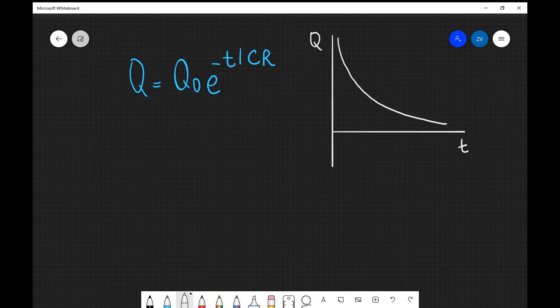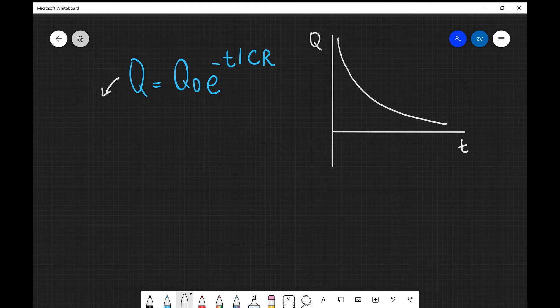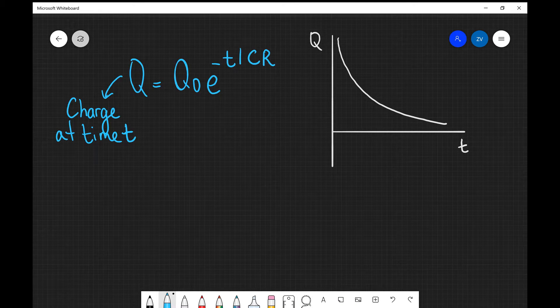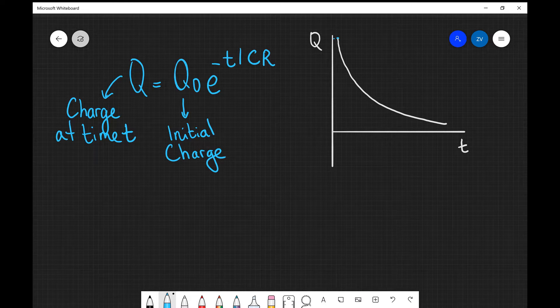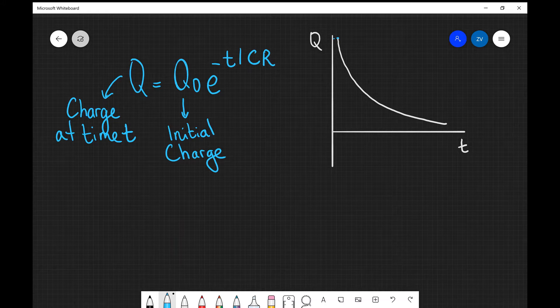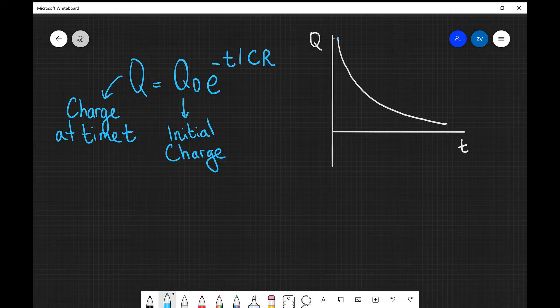We're going to be using this formula, in which Q stands for the charge at time T. Q₀ is the original initial charge, and we have the exponential function as well, in which T stands for time, C is the capacitance of our capacitors or combination of capacitors, and R will be the resistance in the circuit.